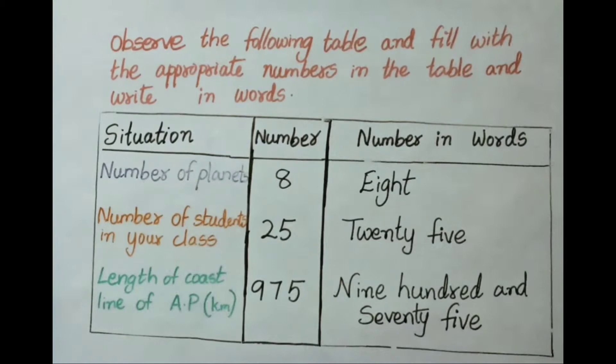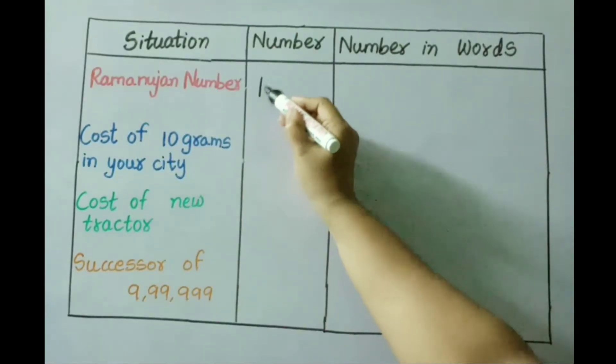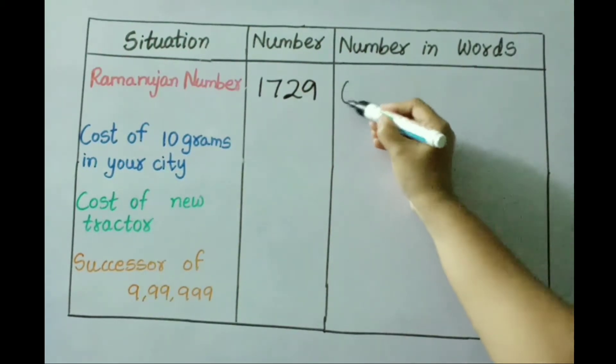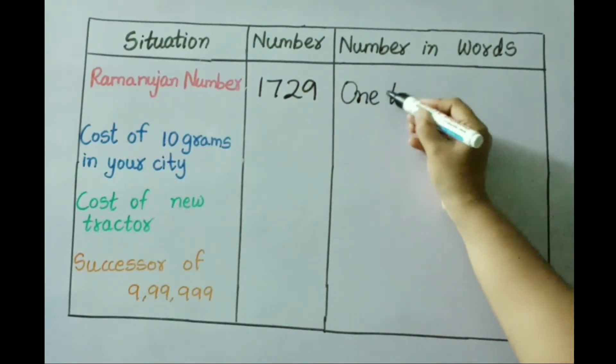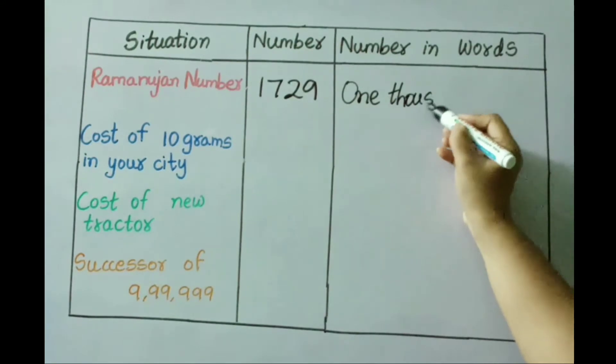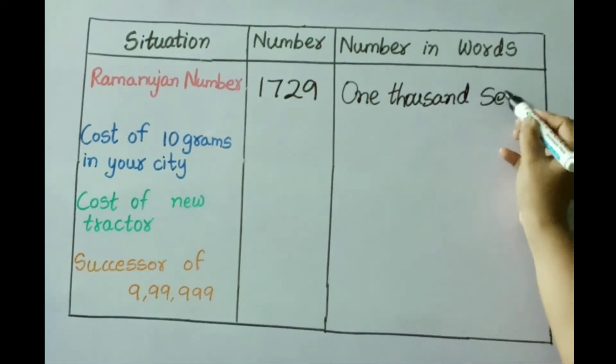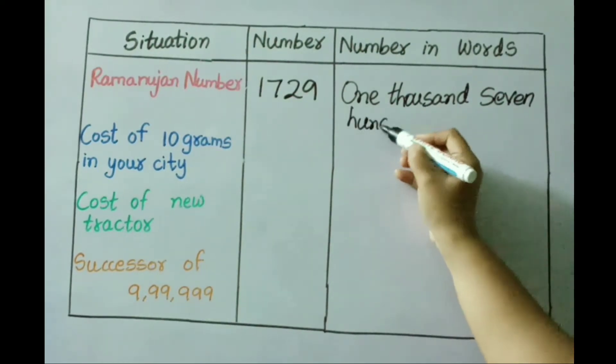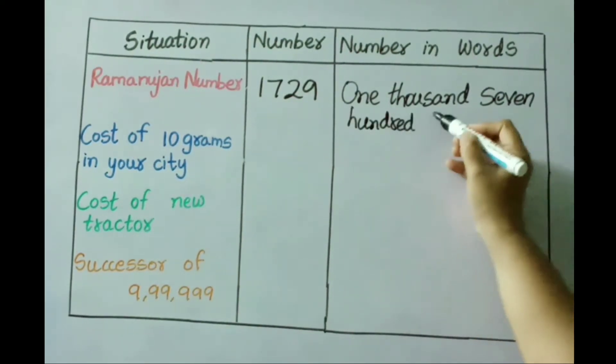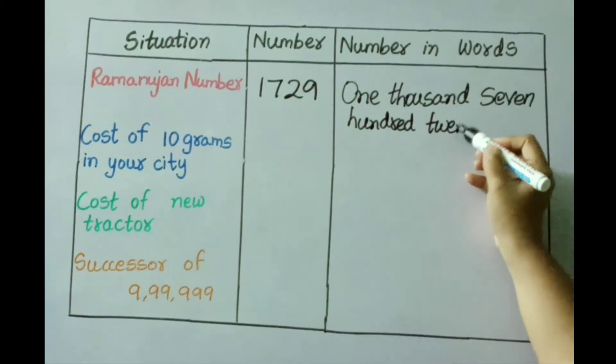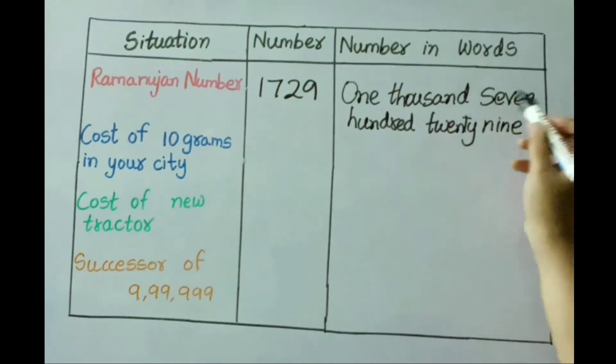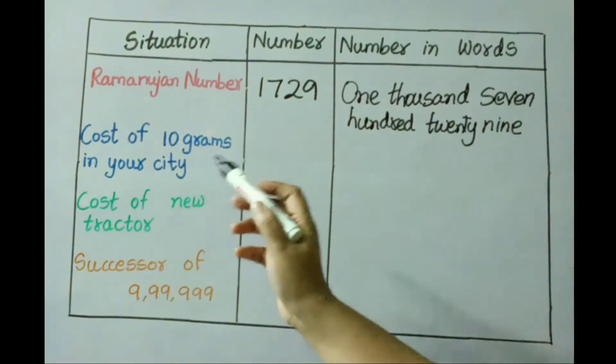Let us see the remaining, that is one thousand seven hundred twenty-nine. Write the number in words: one thousand seven hundred and twenty-nine.